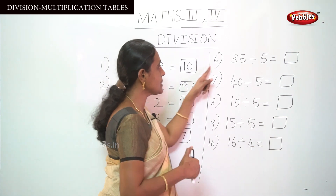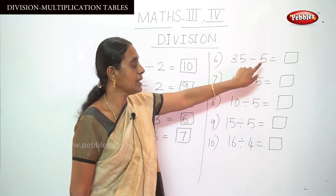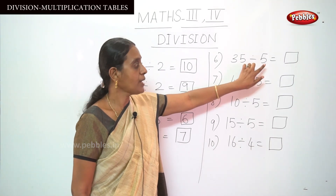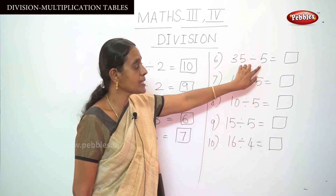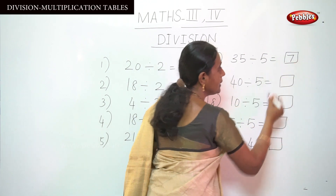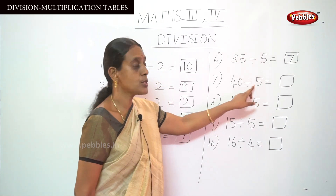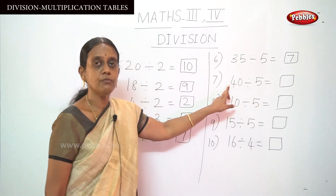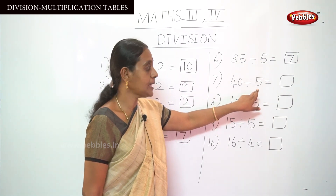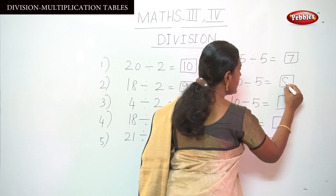Move on to the 6th sum. You are going to say the 5 table for 35 divided by 5: 3 5's are 15, 4 5's are 20, 5 5's are 25, 6 5's are 30, and 7 5's are 35. Put 7 here — 7 is the answer. For the next sum, 40 divided by 5, say the 5 table: 5 5's are 25, 6 5's are 30, 7 5's are 35, and 8 5's are 40. Put 8 here as the answer.